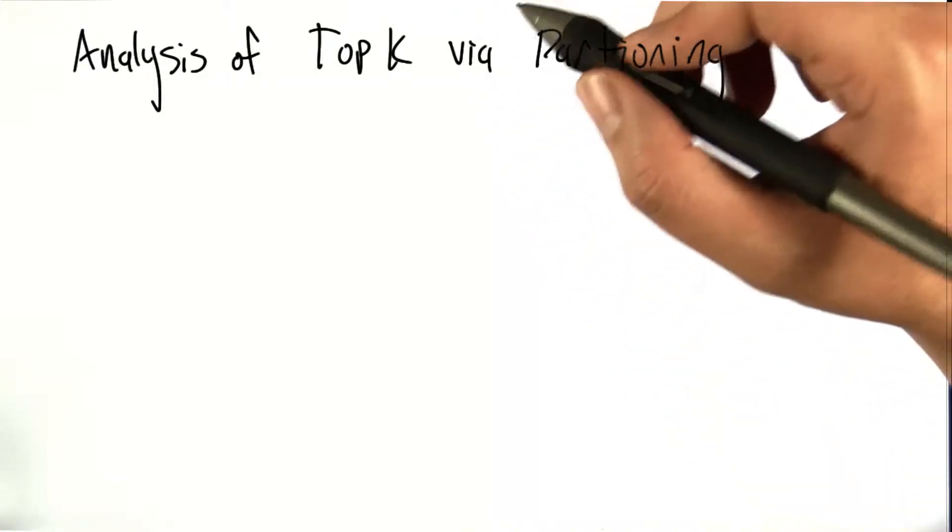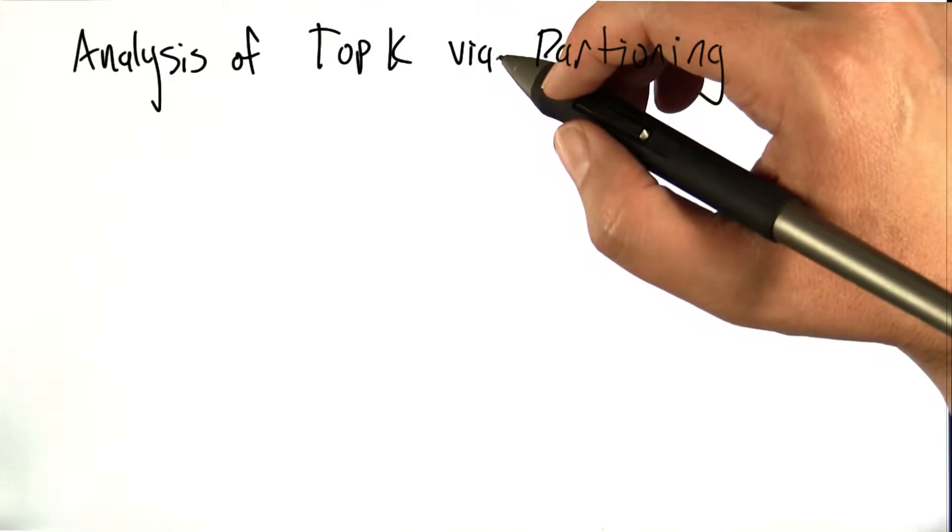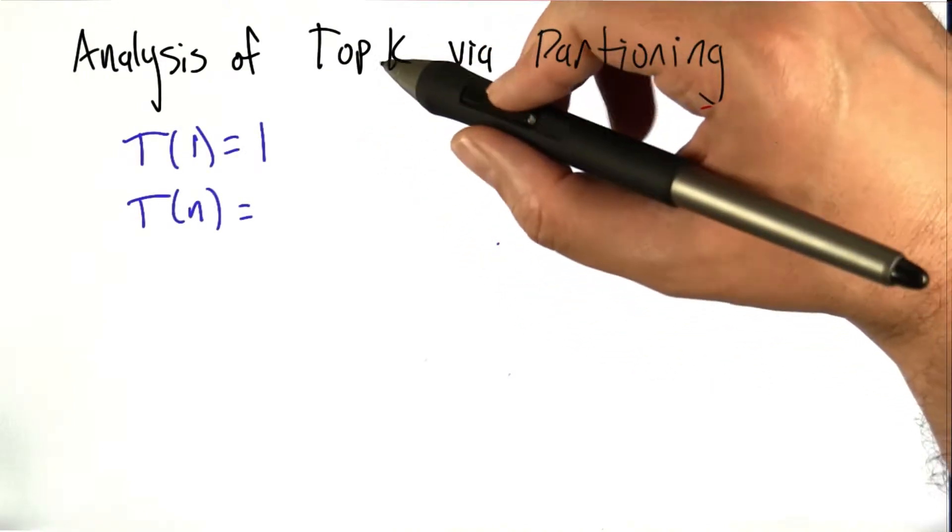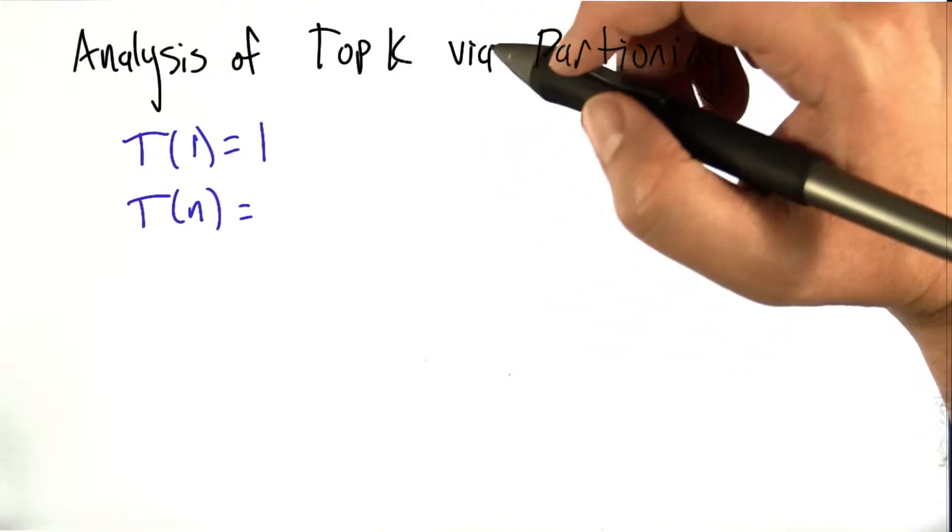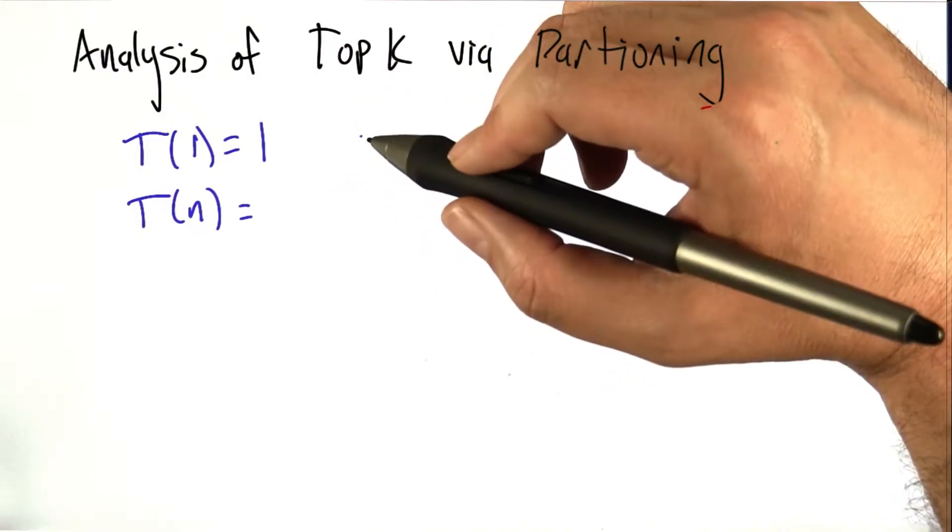So it's cool that top k via partitioning works. It gets us the top k values in not sorted order. Let's do an analysis of the time it takes for top k to do its work via this partitioning approach. Because it's a recursive algorithm, it's going to help to set this up in terms of recurrence relations.